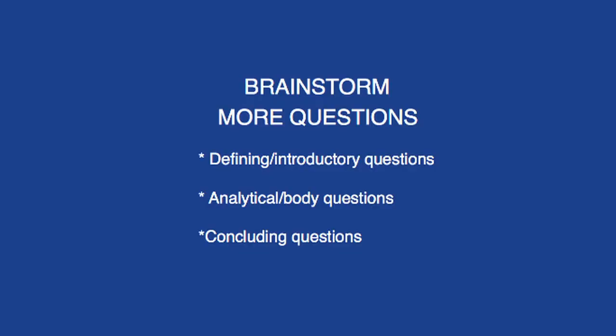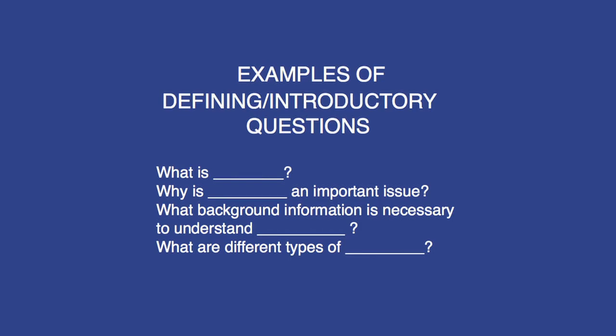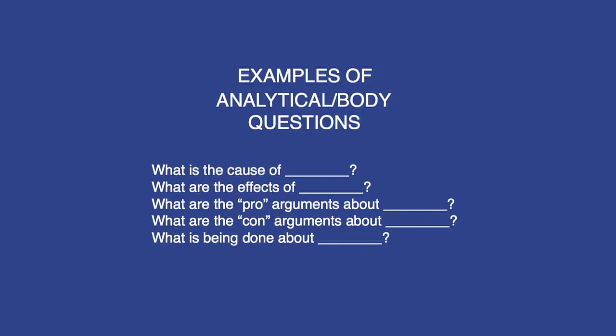Using what you learned from your initial background research, it's time to formulate more questions. It's useful to think of questions that help you define your topic, as well as questions that help you analyze it. What are e-cigarettes? Why are e-cigarettes an important issue? What is the history of e-cigarettes? What are the different types of e-cigarettes? What has caused the rise in popularity of e-cigarettes since their invention in 2007? What are the effects of this rise in use? What arguments suggest e-cigarettes are a much better option than traditional cigarettes? What arguments suggest e-cigarettes still pose a serious threat to the nation's health? What is being done to address the issues surrounding e-cigarettes?